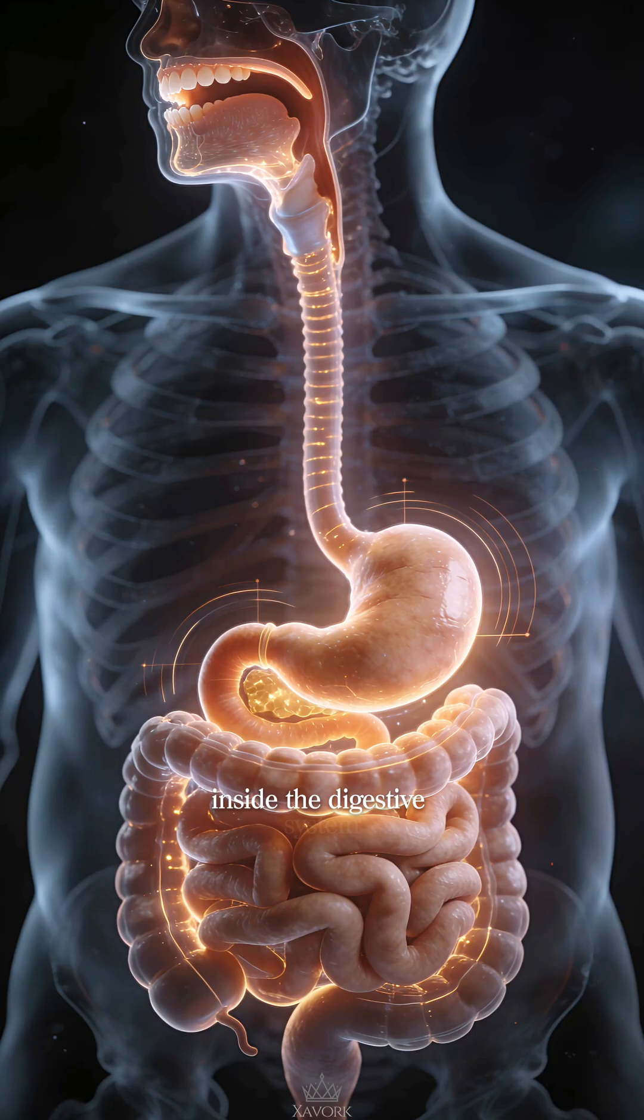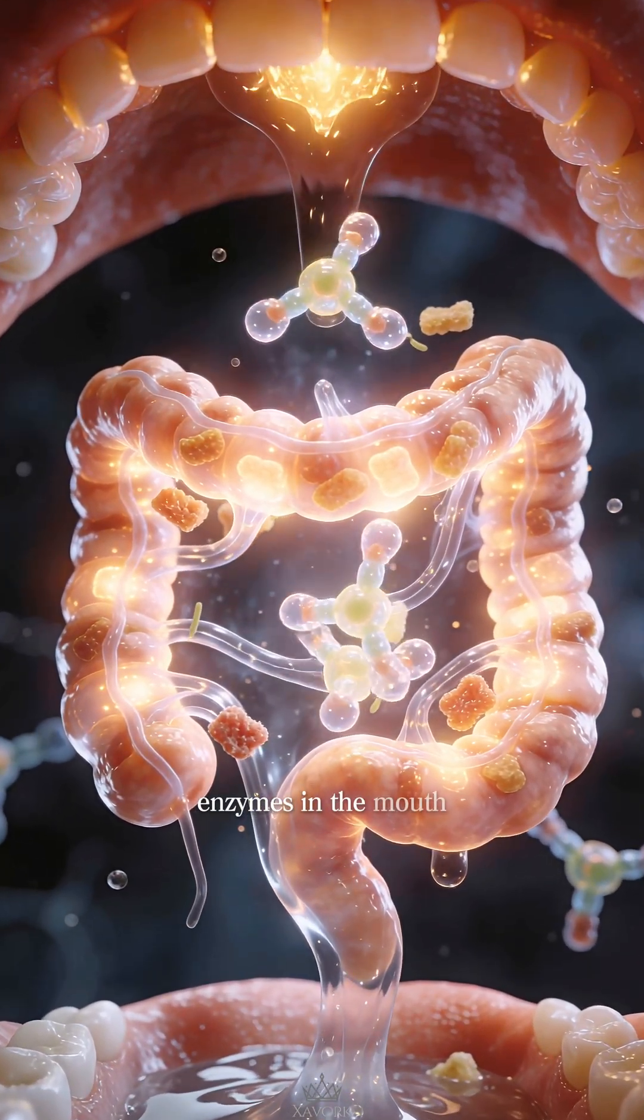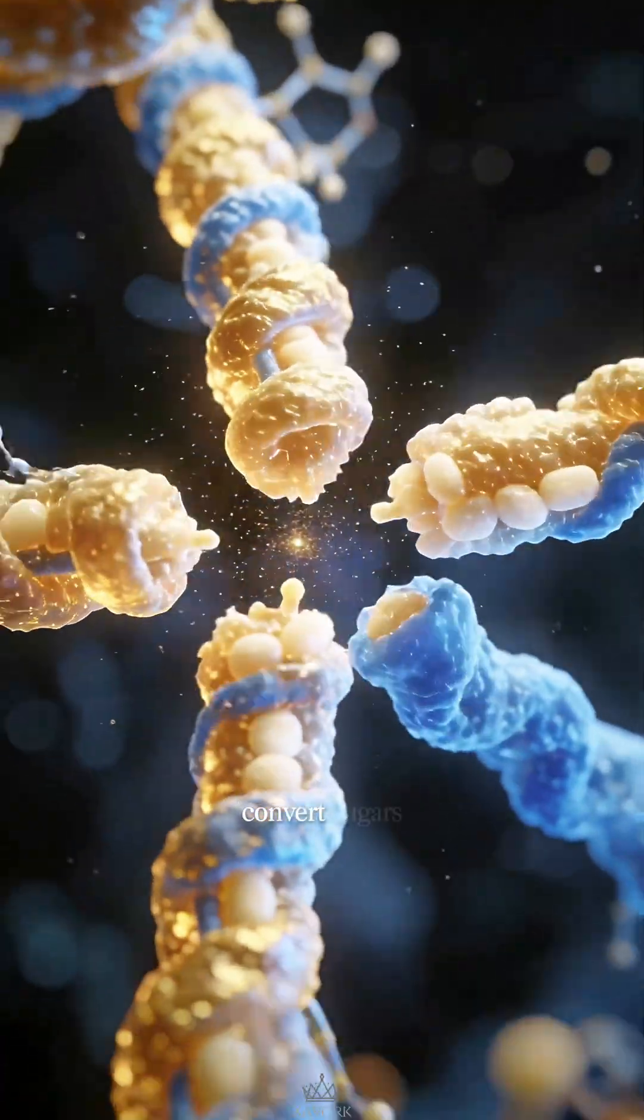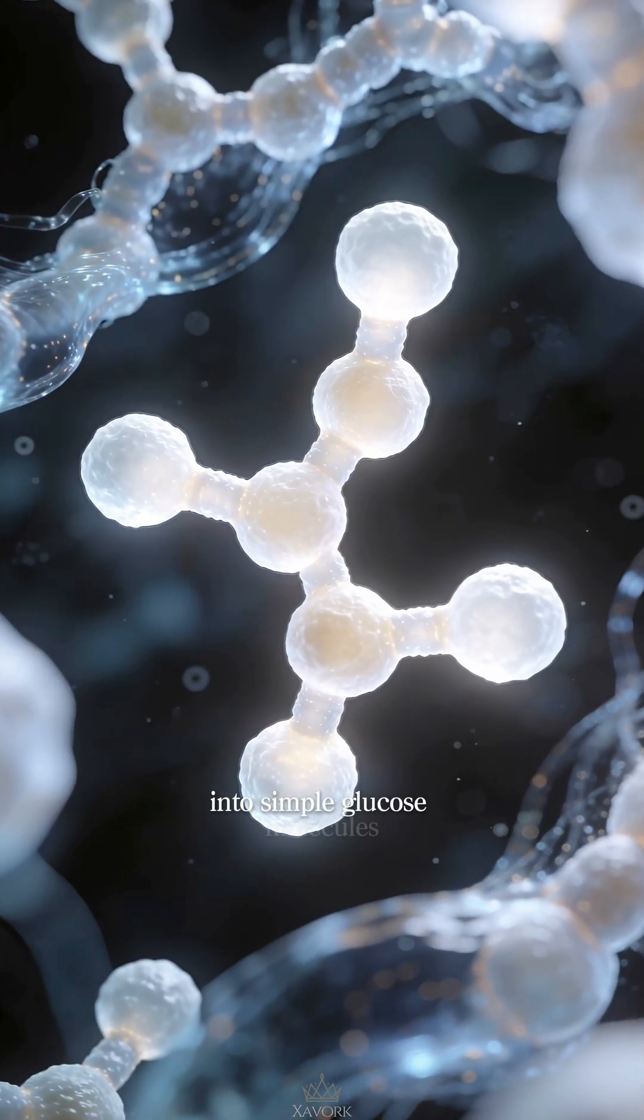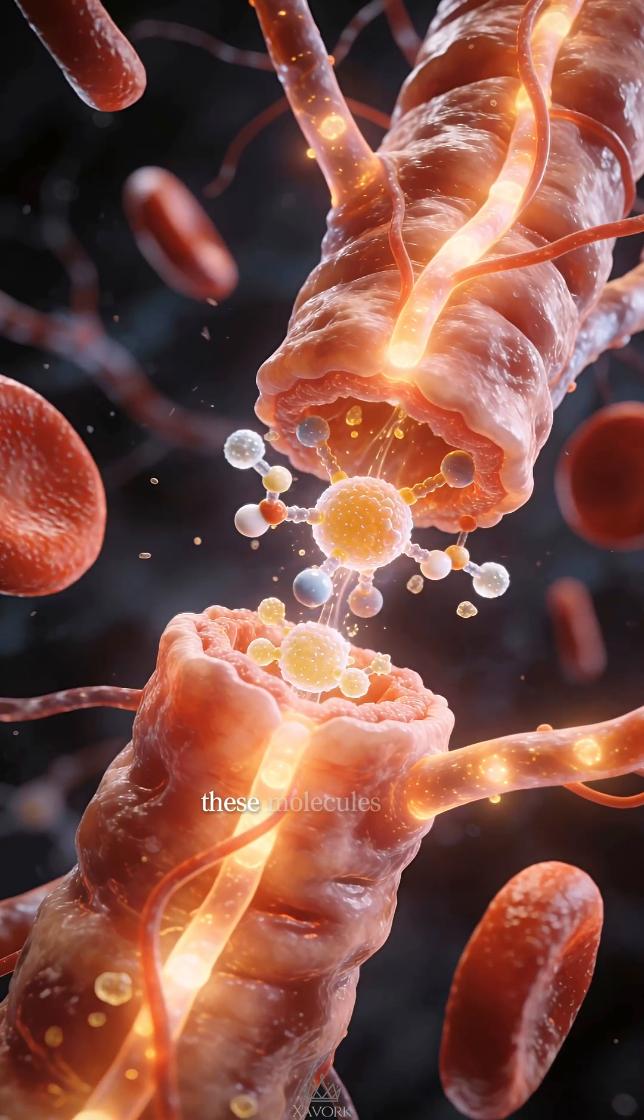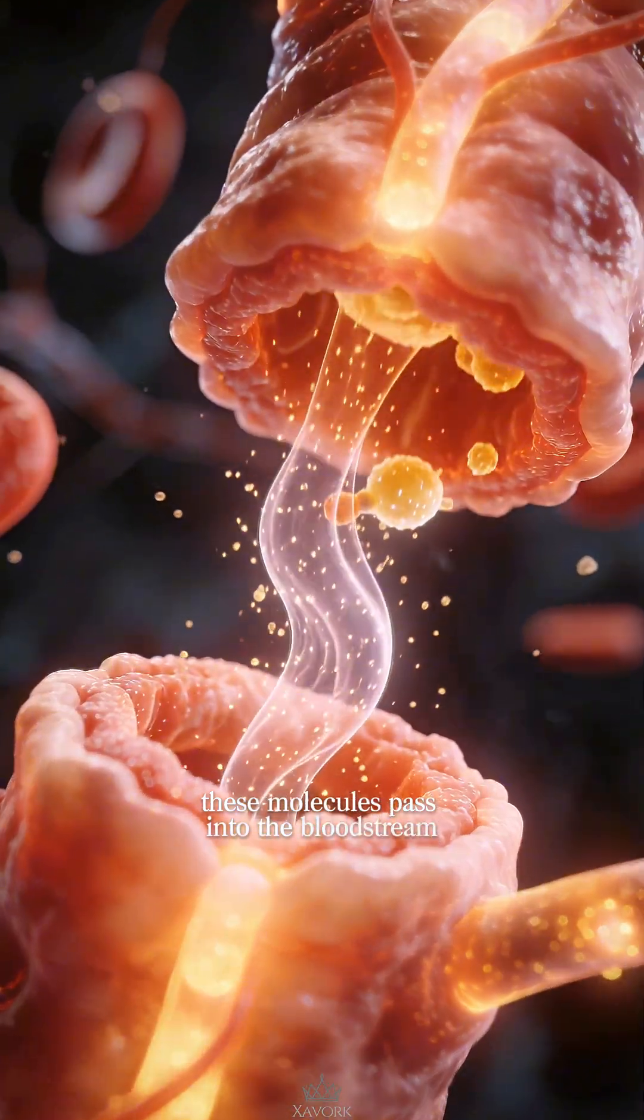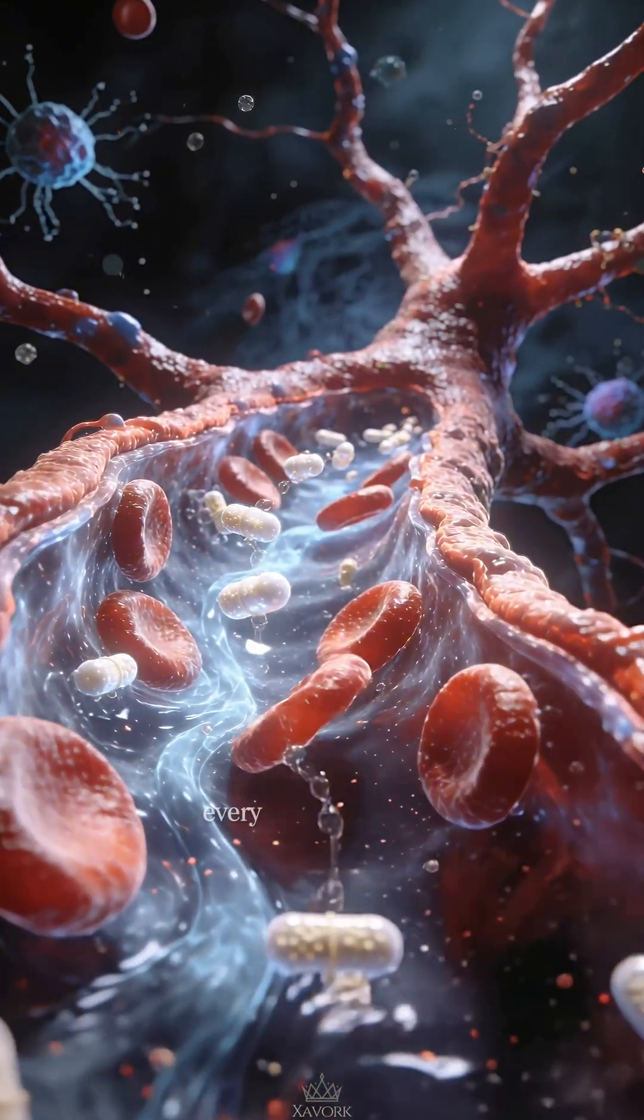Inside the digestive system, enzymes in the mouth and small intestine convert sugars and starches into simple glucose molecules. These molecules pass into the bloodstream, where they are carried to nearly every cell in the body.